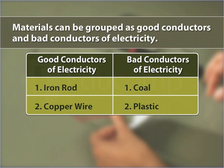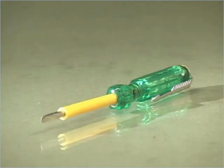On the basis of these observations, these materials can be grouped as good conductors and bad conductors of electricity. Metals like iron rod and copper wire are good conductors of electricity, while coal and plastic are bad conductors of electricity. So, a tester is insulated by plastic to protect the holder from electric shock, as it is a bad conductor of electricity.